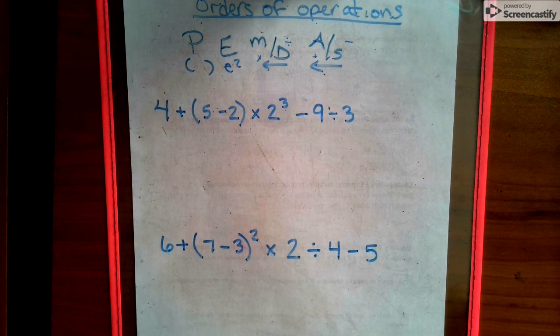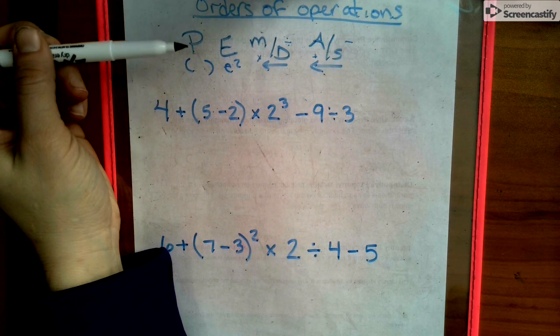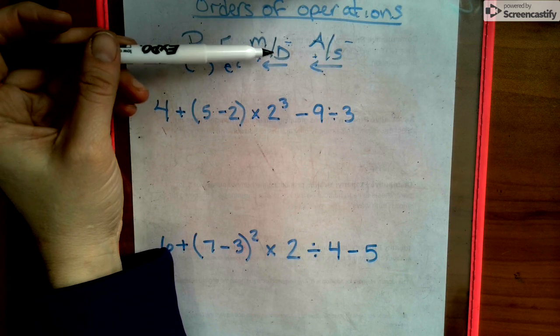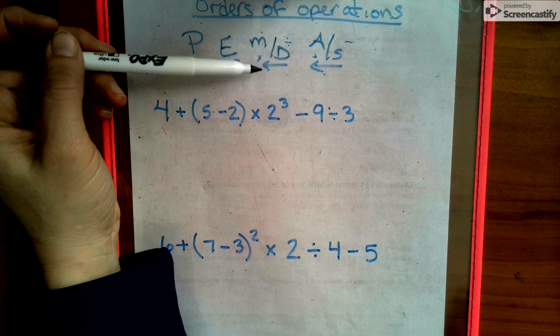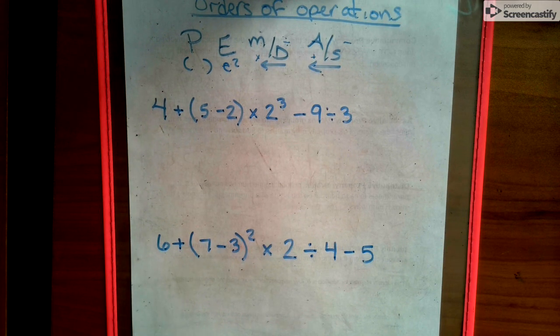Okay, so just to refresh, what we've been doing is orders of operation, and a helper key would be parentheses, exponents, multiply or divide whichever is closest to the left, add or subtract whichever is closest to the left.